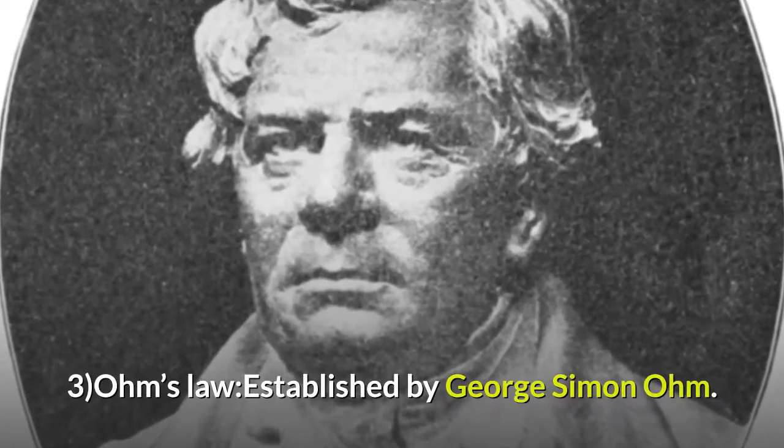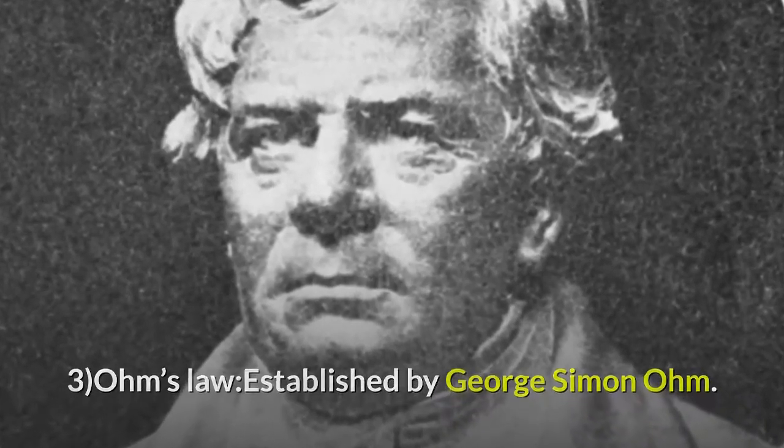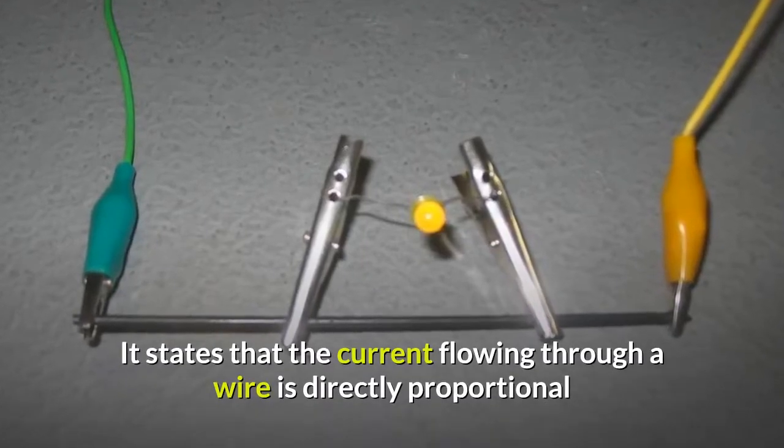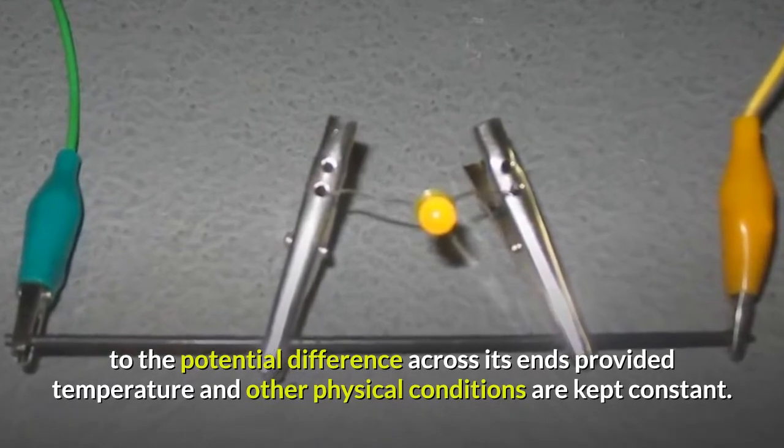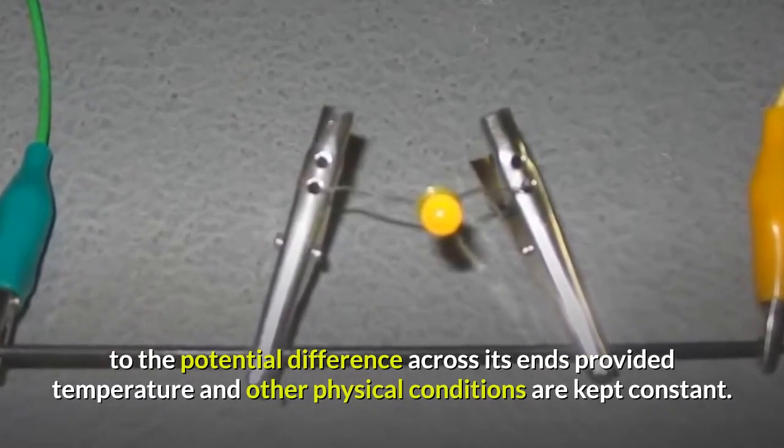Number 3: Ohm's Law, established by George Simon Ohm. It states that the current flowing through a wire is directly proportional to the potential difference across its ends, provided temperature and other physical conditions are kept constant.